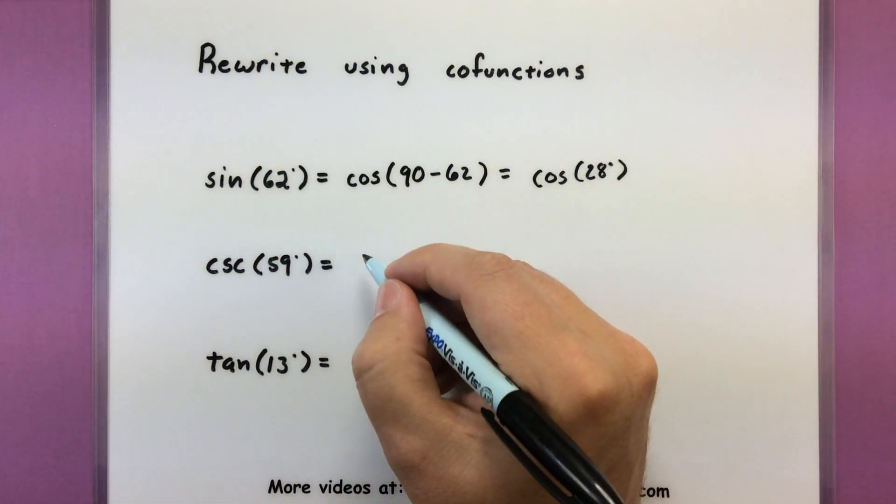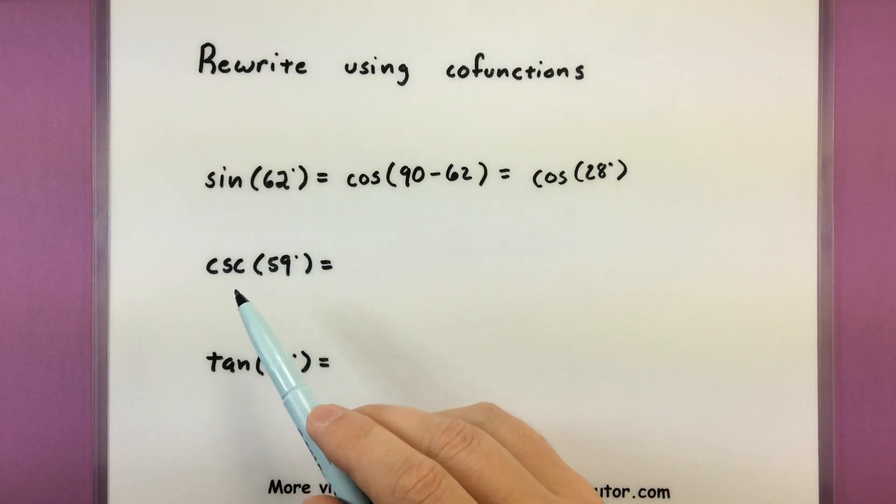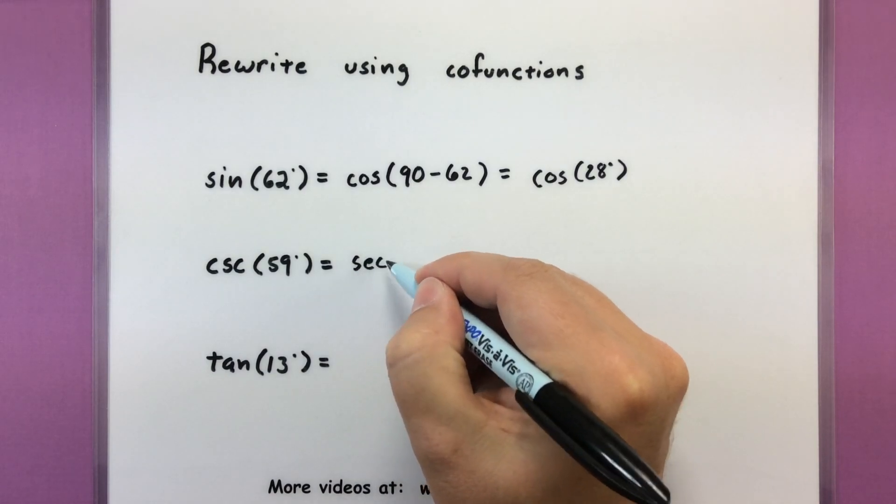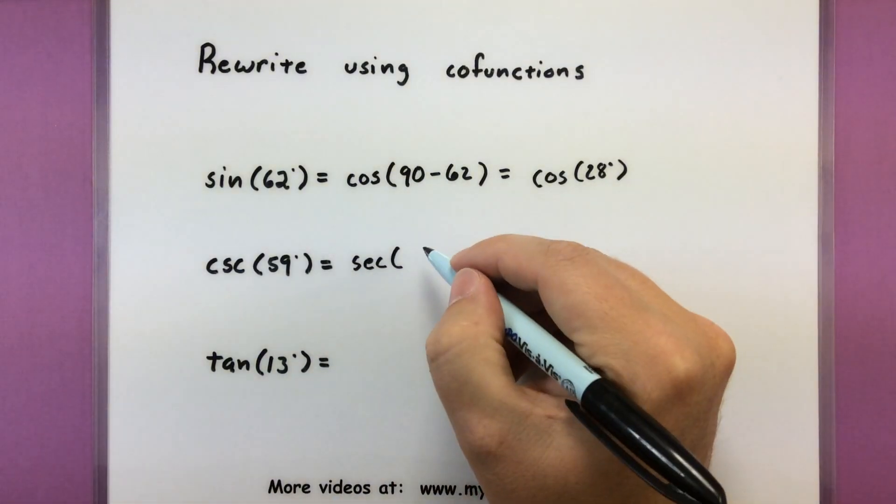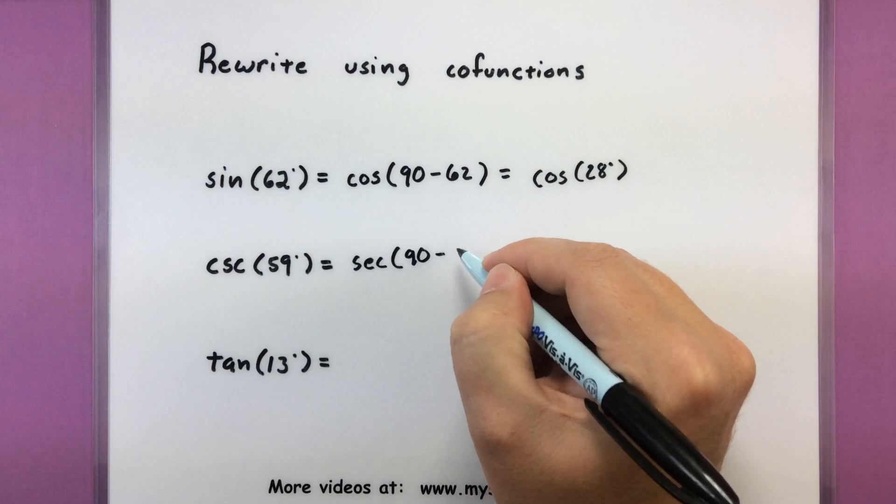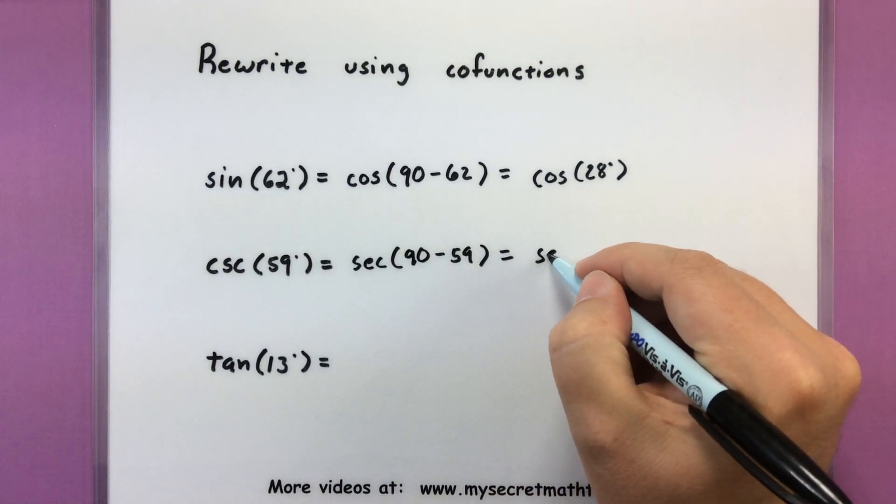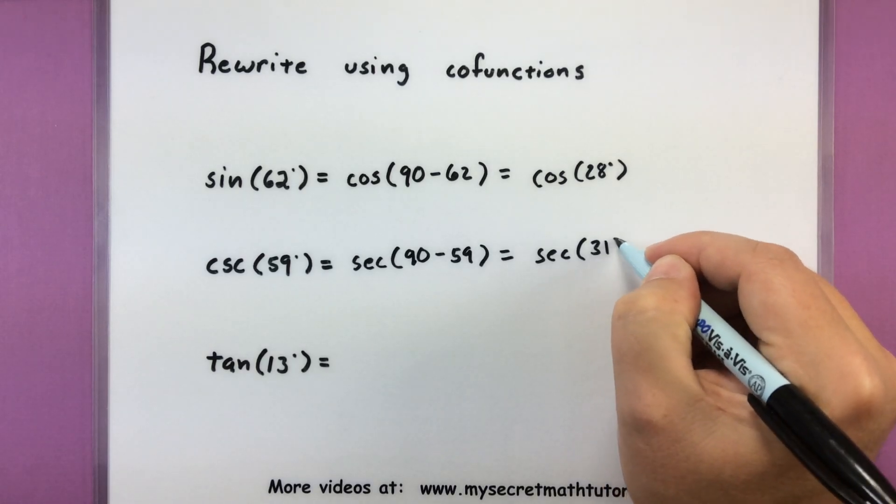Alright, let's try another one. What is the cofunction of cosecant? Well, it's right in the name. It's secant. Get our complementary angle in there. So 90 minus 59. And this will give us secant of 31.